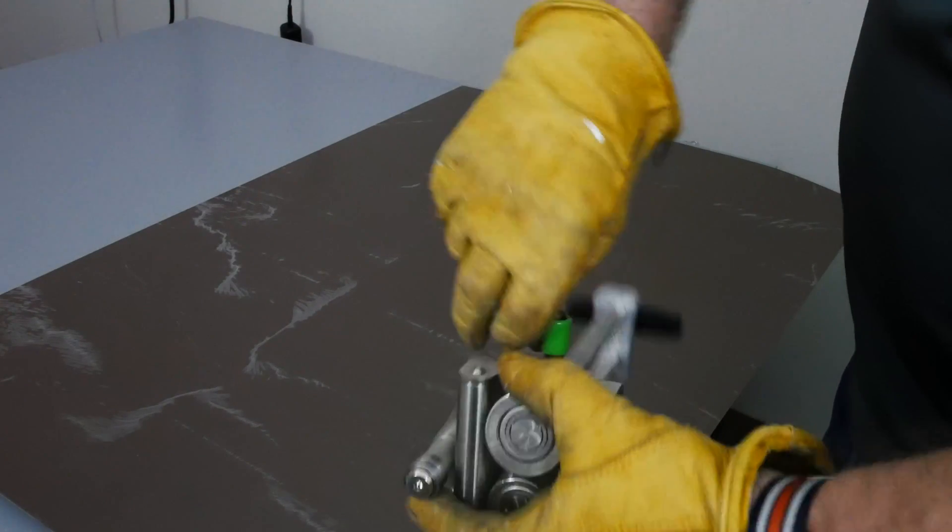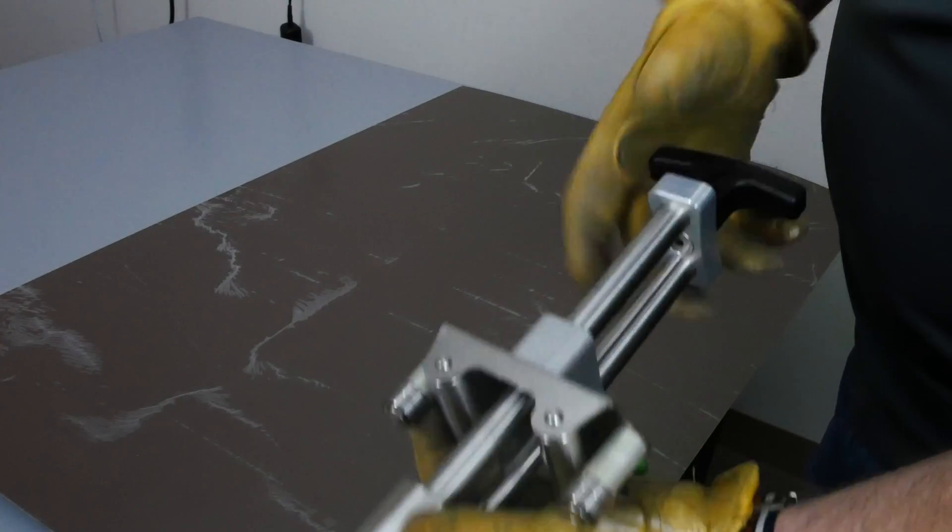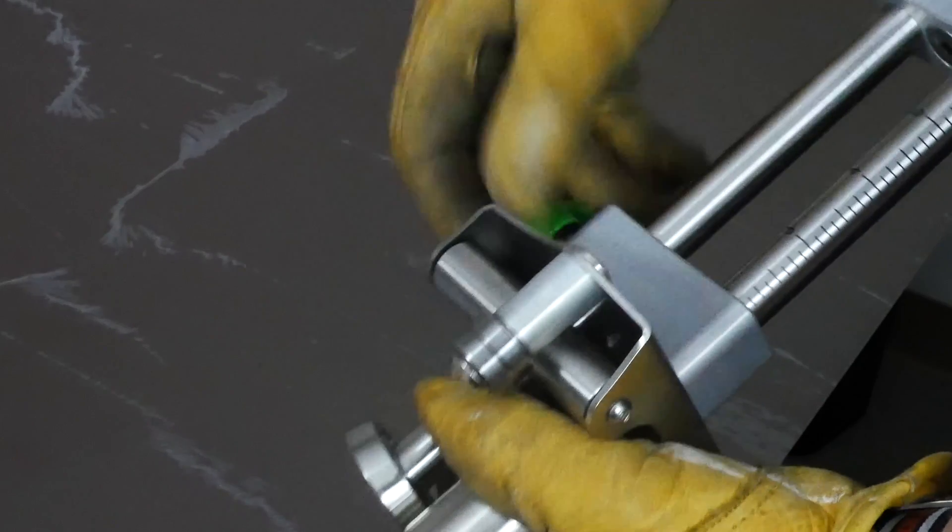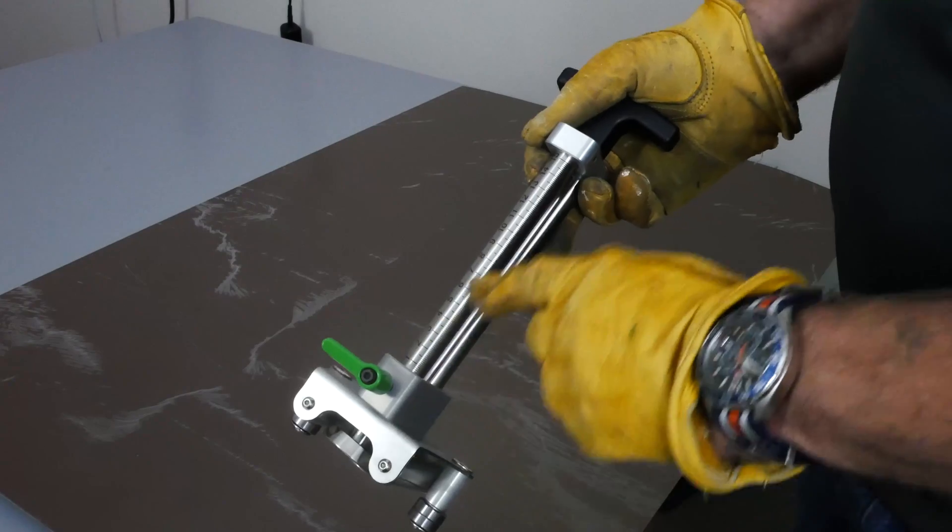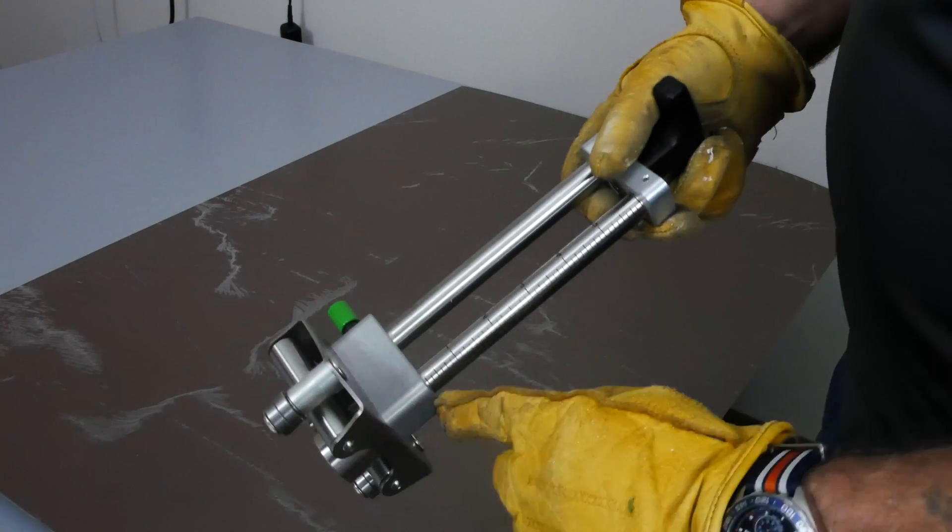First we need to set the initial bending depth by adjusting the carriage on the S-150 Bender using the index marks, then tightening the thumb screw on the carriage. The S-150 has both metric and standard index marks.